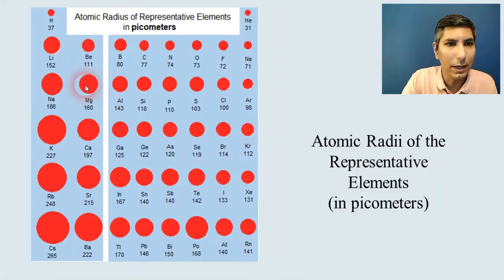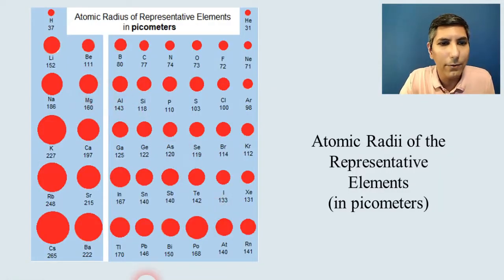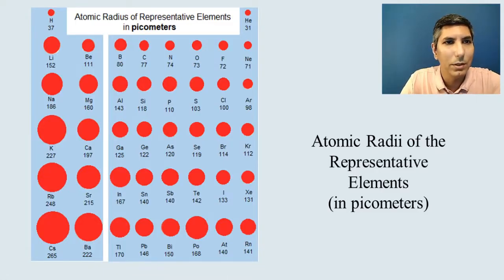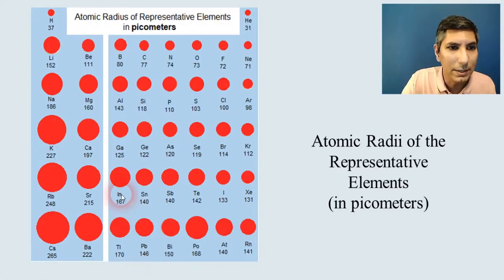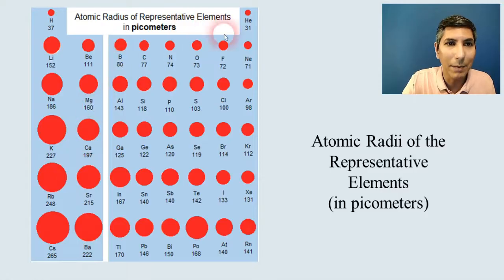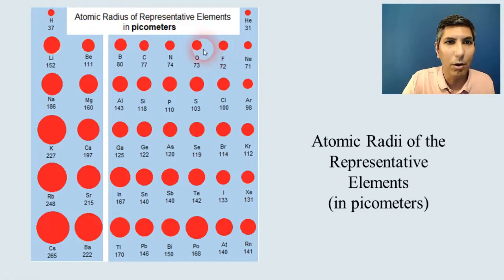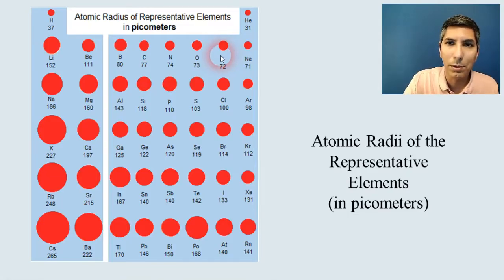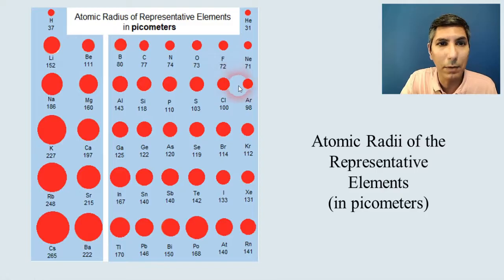Here is a graphical representation of what that would look like, more or less drawn to scale. We have the representative elements and their atomic radii in picometers. The largest atoms tend to be toward the bottom left, like cesium, rubidium, and barium. The smallest atoms tend to be toward the top right, like helium and neon. This should help you remember the relative values of the atomic radii.